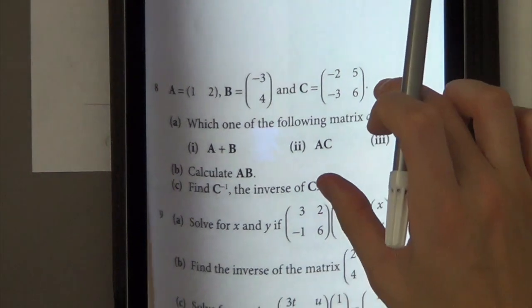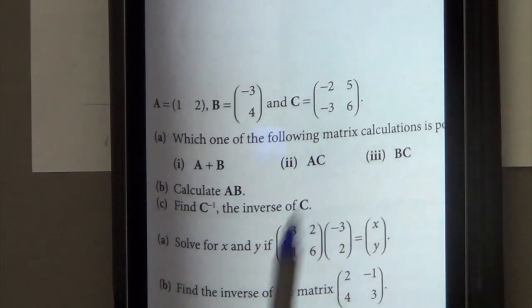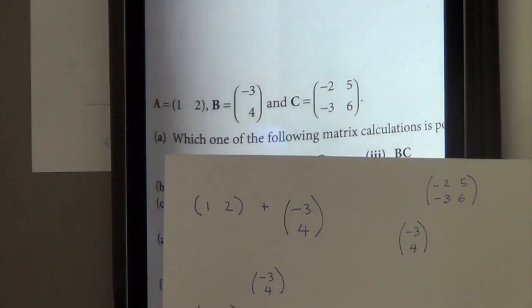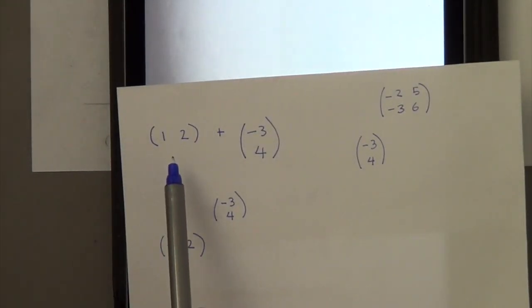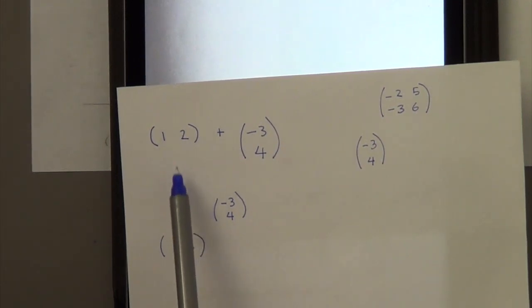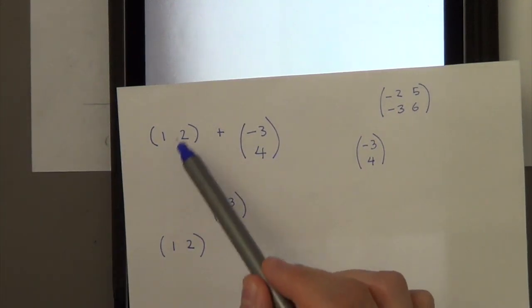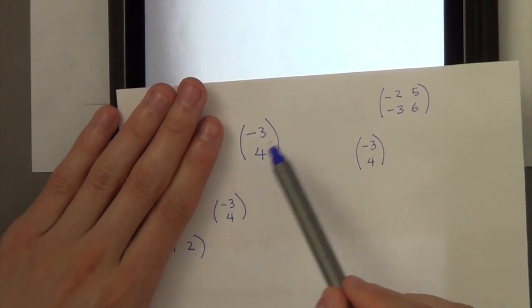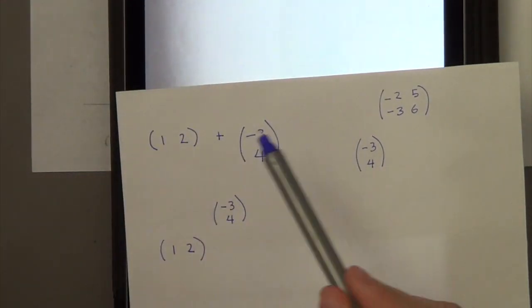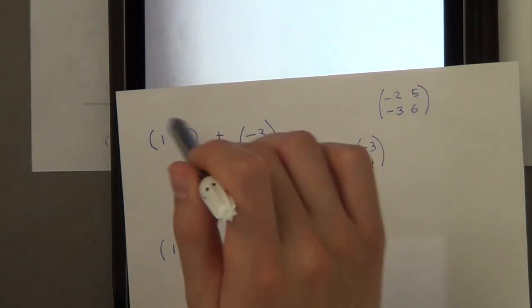Which one of the following matrix calculations is possible? The first one, A plus B — well, no, that's not possible. The rule for matrices is, especially if you're adding or subtracting, you need to have matrices of the same size — one like that and another one like that, adding or subtracting them together. So this is not possible.